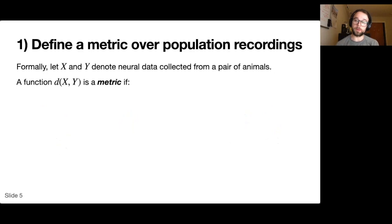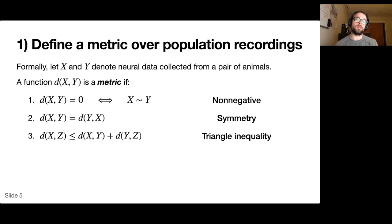These are: one, that distances are not negative. Second, that distances are symmetric. And third, that distances satisfy the triangle inequality. This final one is the kind of trickiest and hardest to prove and satisfy.